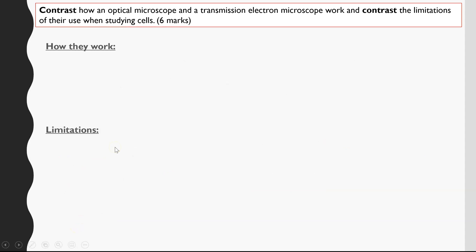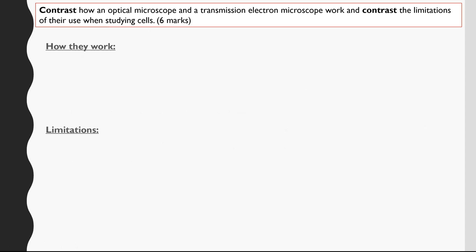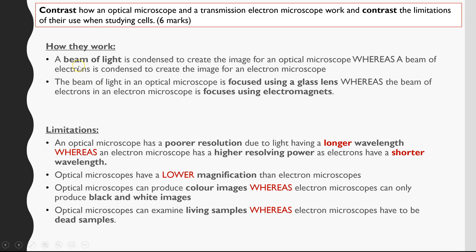Going back to the top tips: bullet pointing — shown. One extra mark — seven instead of six. For highlighting the key word, that's what I've shown here in bold. If it were written by hand, I'd be underlining it — underlining the concept, key word, or feature I'm referring to. In the exam I would also write in capital letters the comparison phrases like 'longer', 'shorter', 'lower', 'whereas', to really emphasise you are contrasting.